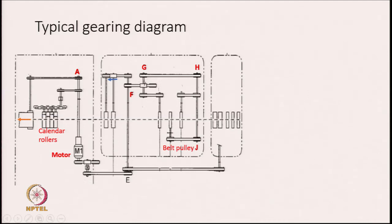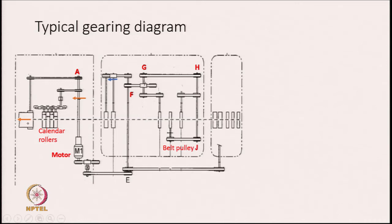This arrow shows the direction of delivery of the machine. These are the calendar rollers, and here is a motor. We can see the way the motion flows — one single motor driving so many elements. From here the motion flows to the calendar rollers as well as to the lap forming unit.